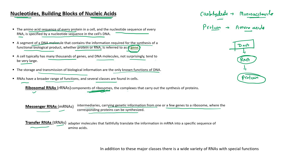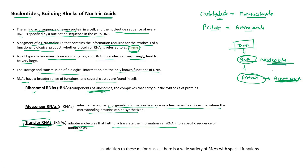The third class is transfer RNA, represented as tRNA. tRNA is an adapter molecule that faithfully translates the information in mRNA into an amino acid sequence. RNA is made of nucleotides, and proteins are made of amino acids, so tRNA converts the language of nucleotides into the language of amino acids. tRNA is the intermediate between nucleotide sequence and amino acid sequence.